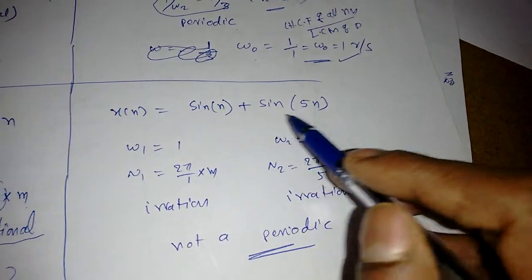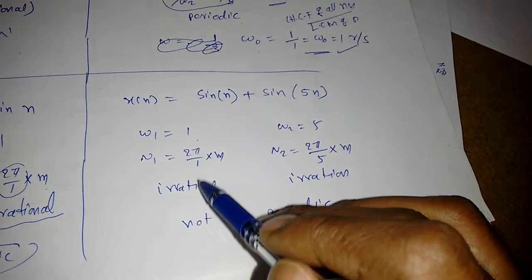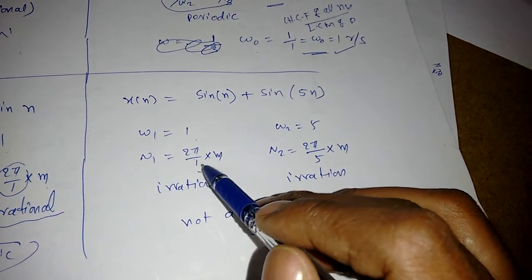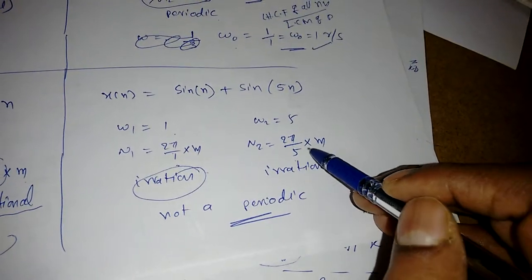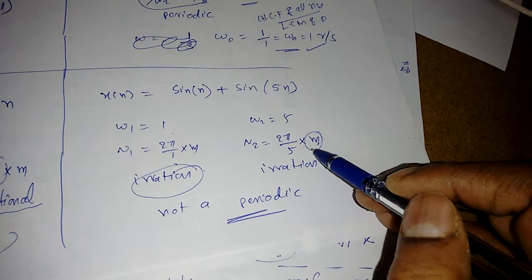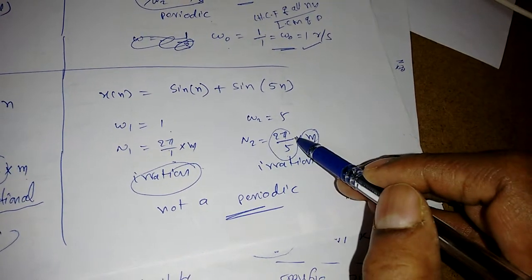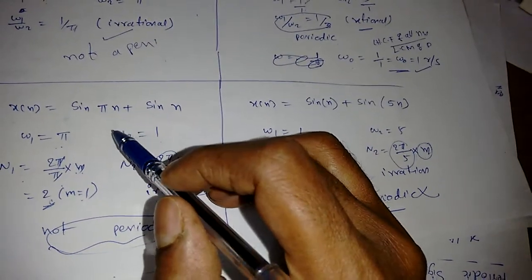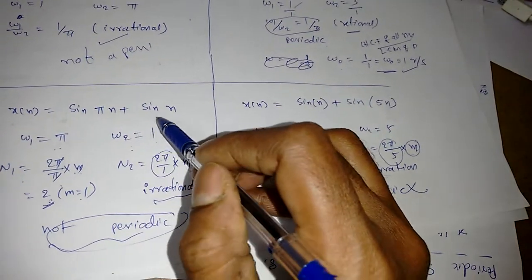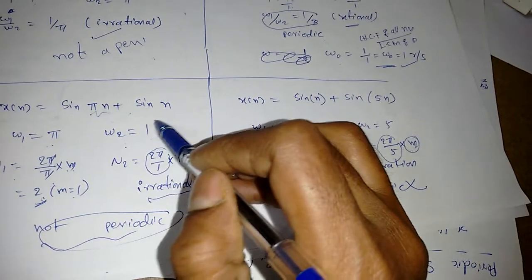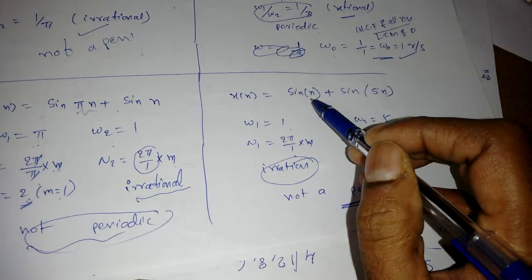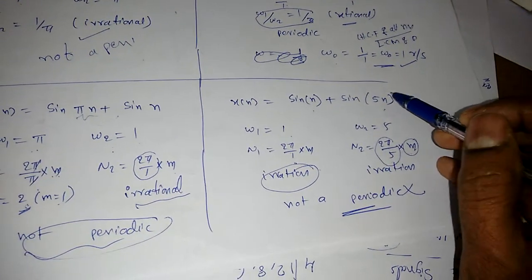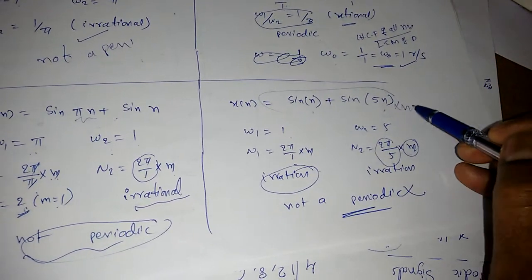Similarly if it is sin n plus sin 5 n, omega 1 is 1. So 2 pi by omega, that is 2 pi by 1 into m, is again irrational. Similarly 2 pi by 5 into m. There is no m which will make it a rational number, so it is again not periodic. Remember when you see discrete signals, all signals should contain pi. Then only it will become a periodic signal. Whenever there is no pi in the omega, we can say directly the discrete signals are not periodic.